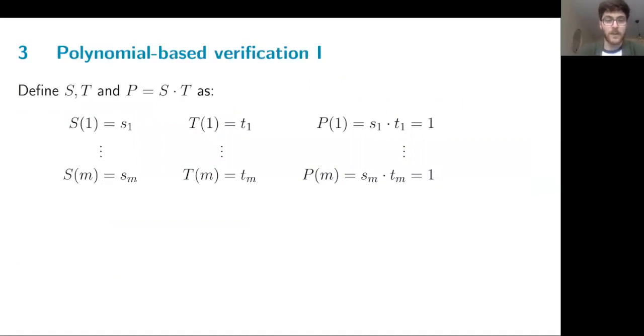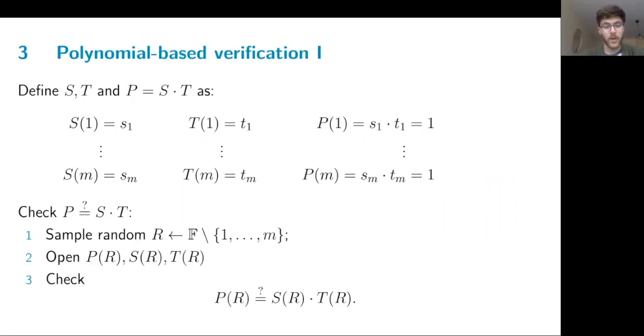The beginning of our improved check uses these polynomials S and T defined using the inputs S and the injected inverses T. The polynomial P is defined as their product. And we see that by defining the evaluation of P on these points one to M to be equal to one, this is where we are setting the relation that we are verifying. So if we wanted to verify a different relation between S and T, this is what we would change here.